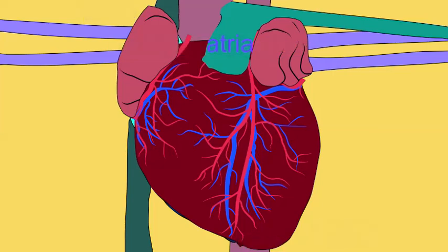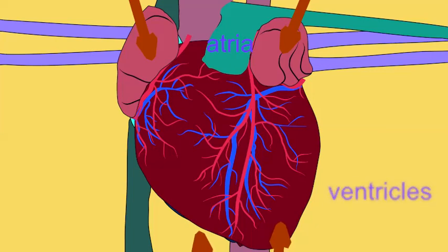The chambers known as atria lie near the base of the heart, while the larger chambers, the ventricles, make up the majority of the heart moving towards the apex.